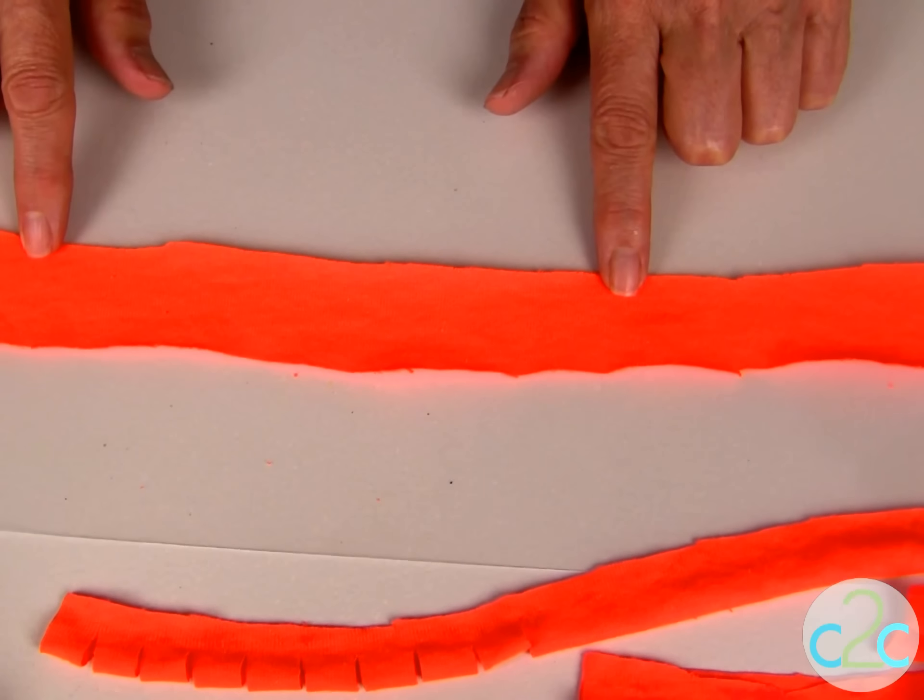The first thing that you want to do is to cut your t-shirt or your bandana or your fabric into strips. The width of the fabric depends on what size finished flower that you would like to create.